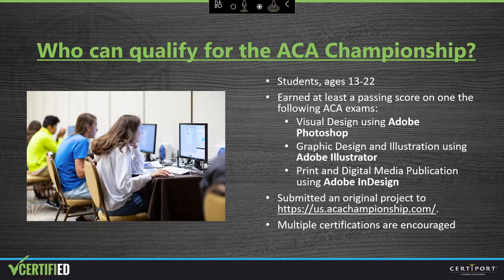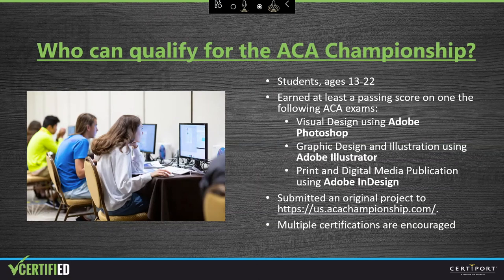The Adobe Certified Associate Championship is for students between the ages of 13 and 22 as of June 15, 2021. Students can qualify by doing two things: the first is earning at least a passing score on one of the following exams — visual design using Adobe Photoshop, graphic design and illustration using Adobe Illustrator, or print and digital media publication using Adobe InDesign. We recommend that students earn multiple Adobe Certified Associate certifications. The second step is to submit an original project that the students created themselves.